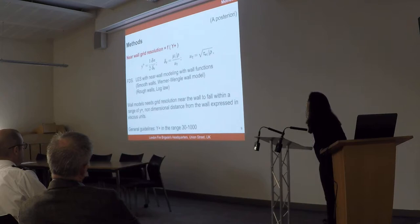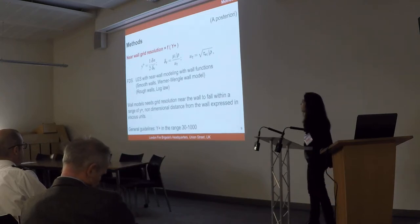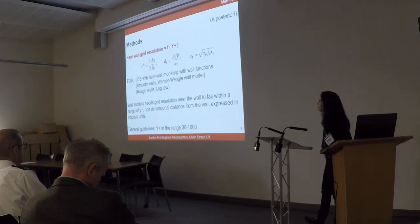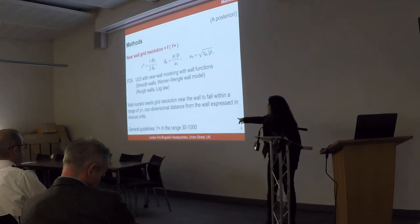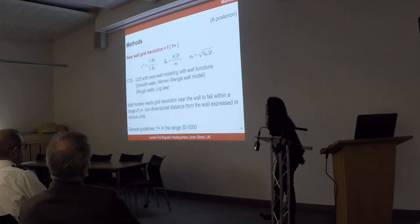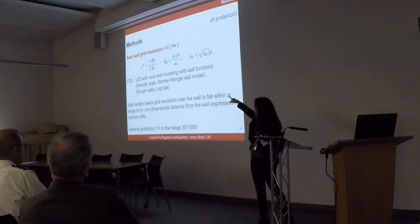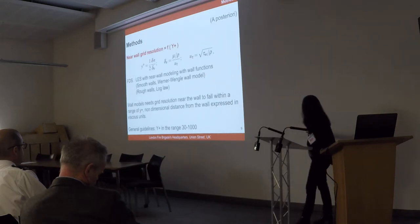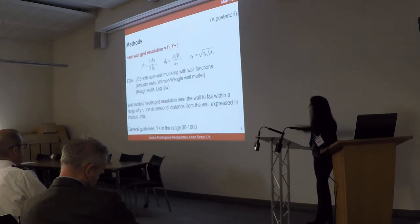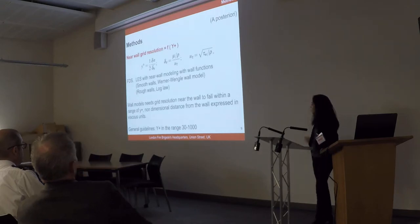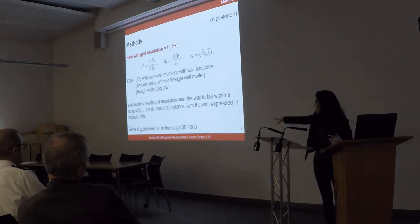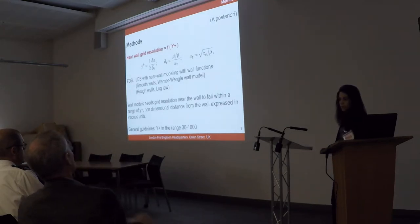Another method concerns Y-plus. Y-plus is a non-dimensional parameter related to the resolution near the wall. When we make predictions near the wall, it is useful to check if this parameter is contained in a range. For typical fire applications, this range is 30 to 1000. Y-plus is expressed as ΔN divided by δv, where ΔN is the length of the grid near the wall and δv is a viscous length parameter. The finer the grid near the wall, the lower the Y-plus and the higher the resolution. A Y-plus value of 30 indicates very good wall resolution.